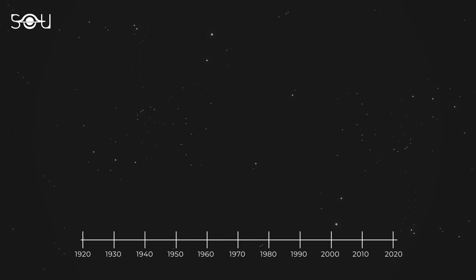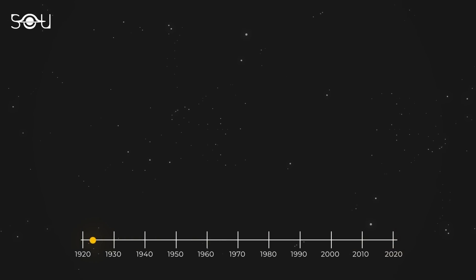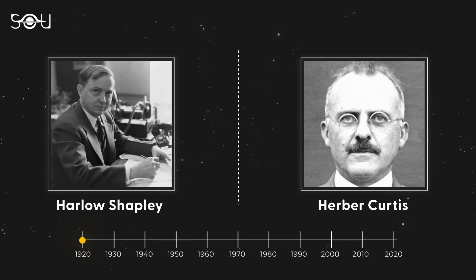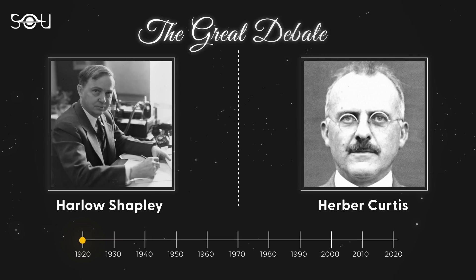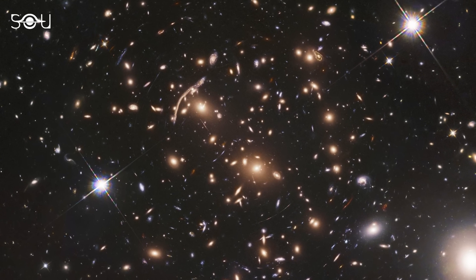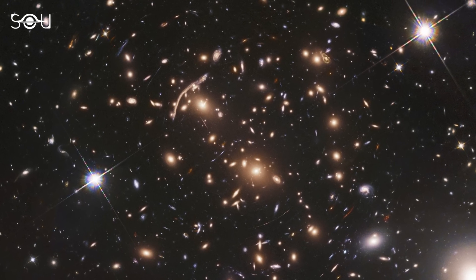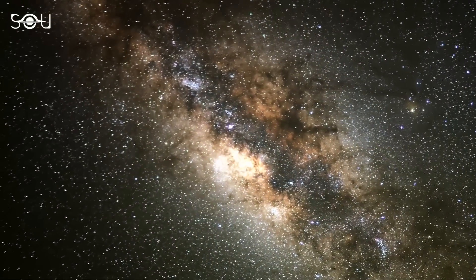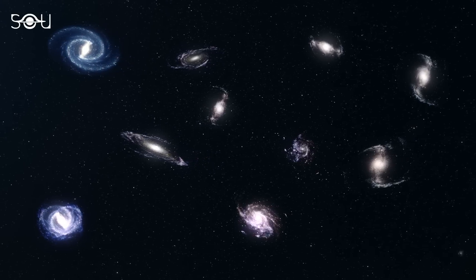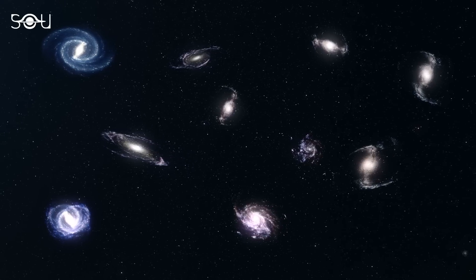To understand the biggest crisis in cosmology, we need to go back a hundred years to the 1920s. Two astronomers, Harlow Shapley and Herbert Curtis, were engaged in a serious debate now known as the Great Debate. At its core, this debate was about the scale of the universe. The question was simple yet profound: was our Milky Way galaxy the entire universe, or were there other galaxies beyond it, making the universe much bigger than we thought?